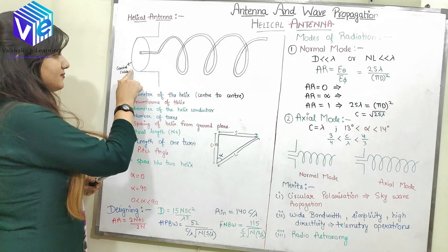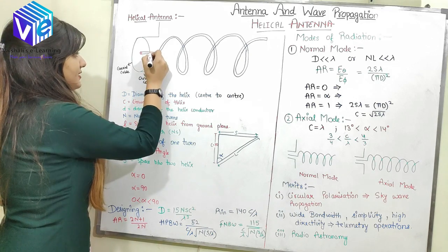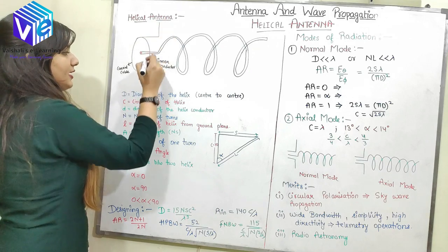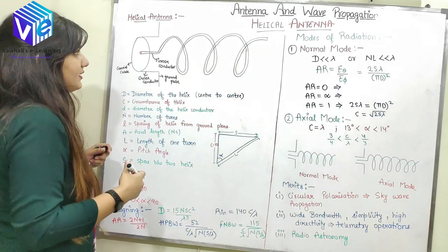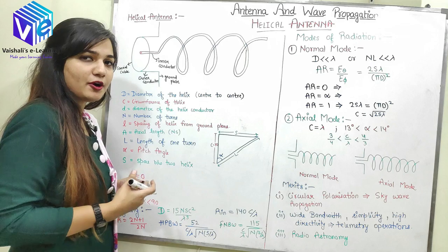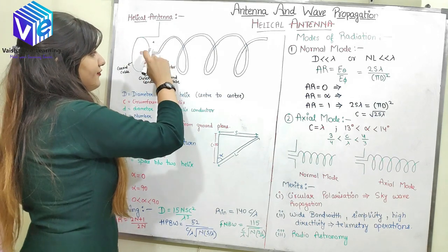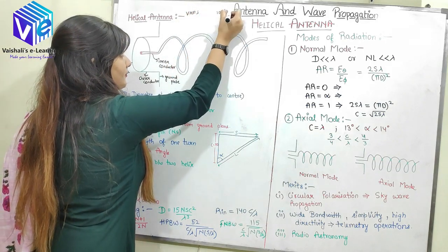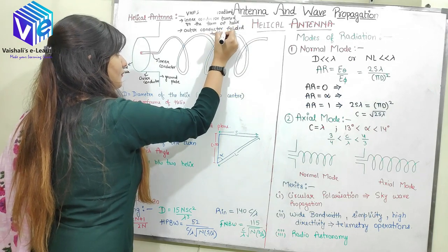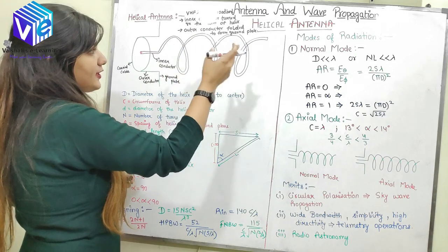From this structure, if this is my coaxial cable, this is the outer conductor — the green side represents the outer conductor and the red or blue part represents my inner conductor. This outer folded-out portion is called the ground plate and this structure is called the helical antenna. A helical antenna is a VHF and UHF broadband antenna which is formed by turning the inner conductor of the coaxial cable in the form of a helix. Its outer conductor is folded to form the ground plate.